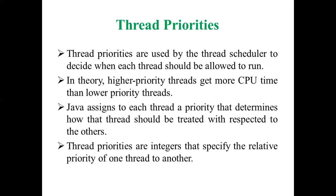High priority threads generally get more CPU time than low priority threads. Java assigns each thread a priority that determines how the thread should be treated with respect to others. Threads have a relative priority value, and based on that, the CPU treats each thread compared with the others. Thread priorities are integers ranging from 1 to 10, representing minimum, maximum, and normal priority.